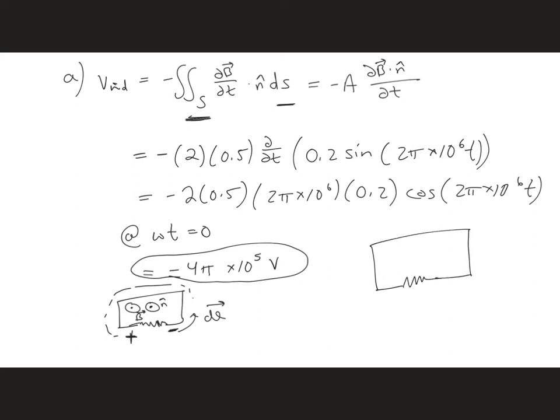So now, if I redraw this loop, the actual direction of v induced will be minus to plus in this direction.